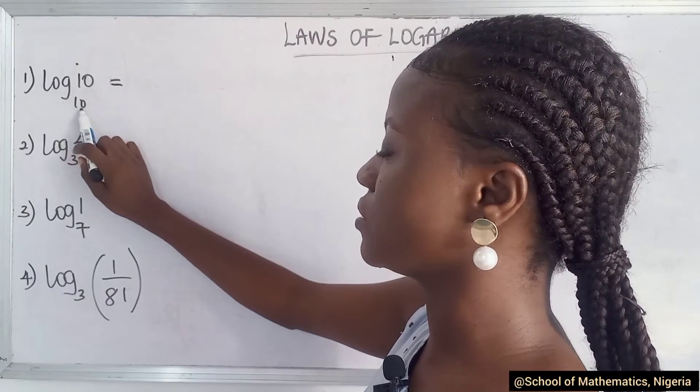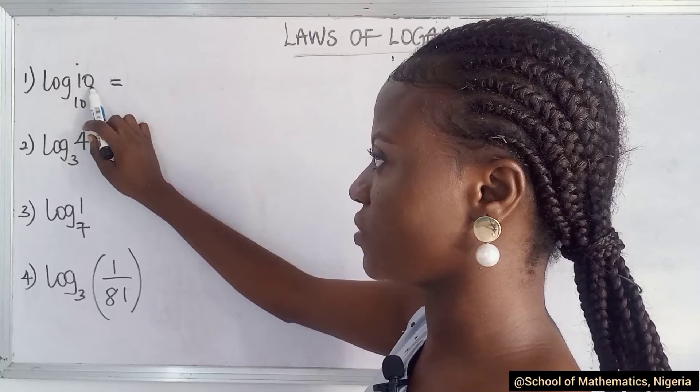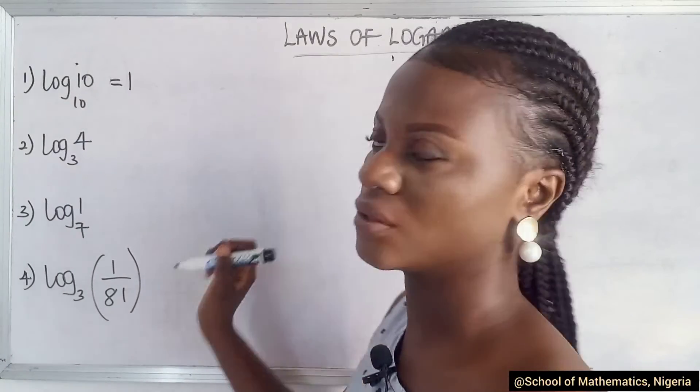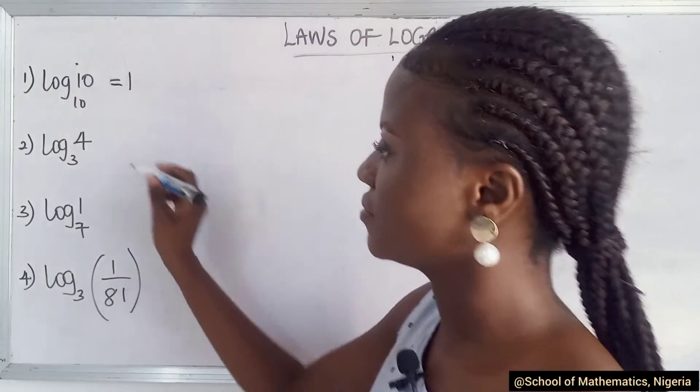When you have the log to the base of a value, which is the same with this, it becomes one. That's all. Straightforward.